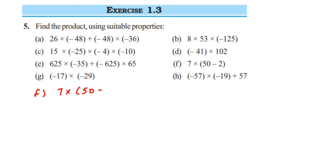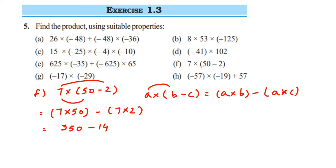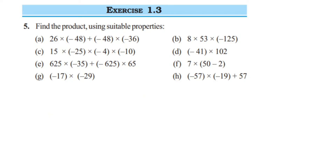Problem f: 7 into 50 minus 2. We use distributive property under subtraction: a into b minus a into c, which equals a into b minus c. Substituting: a is 7, b is 50, c is 2. Opening brackets: 7 into 50 is 350, minus 7 into 2 is minus 14. Subtracting gives 336, and the answer is positive since 350 is greater and positive.